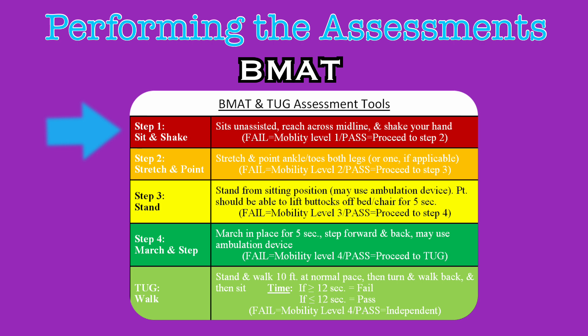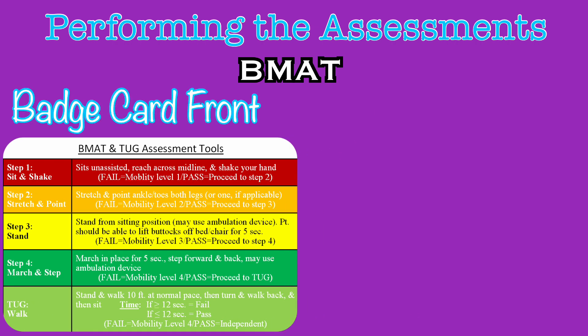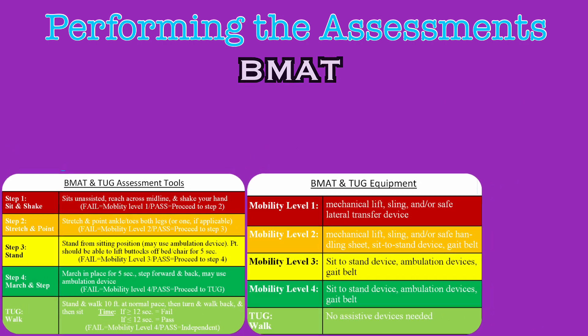You will always start at the first and easiest step and progress through the assessment until the patient is unable to perform a task. At this point, there is no need to continue the assessment further. Failing at a certain step will dictate the mobility level and interventions required for this patient. Or they may pass all steps, which also dictates mobility level. At Trinity Livonia, there is a badge card that gives instructions for assessment on one side and interventions based on the results on the back, and it will be used as a guide in this video.